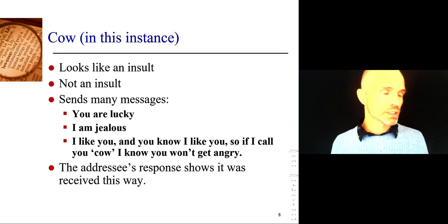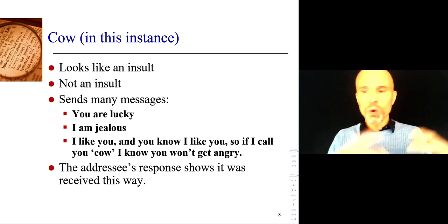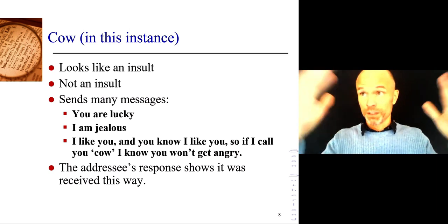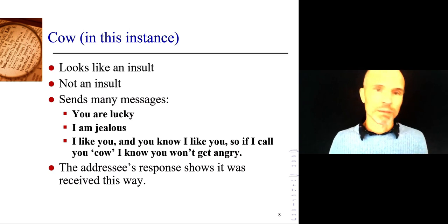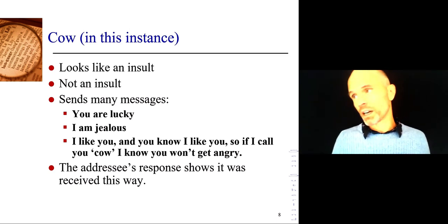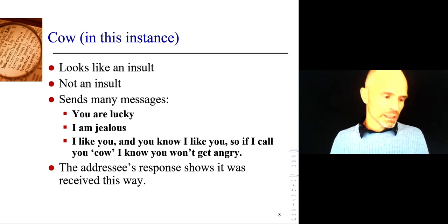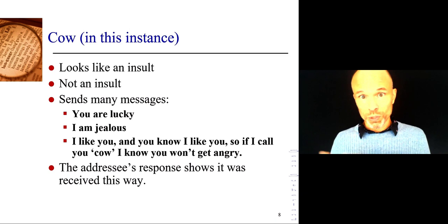So in this use, cow shows that we have a close relationship, close enough that we can insult each other. And student B, the one who was addressed as cow, her response shows that it was received this way. So that's the process you can go through when thinking about language in use. Cow as a term, as a noun, means something, but cow as a bit of discourse includes the co-text, the words around it, and the context, the physical situation. From the context, the smiles and the easy body language, and from the co-text, it became apparent that in this instant, cow was taken as a positive message of social bonding.